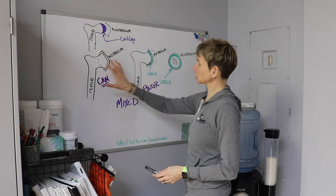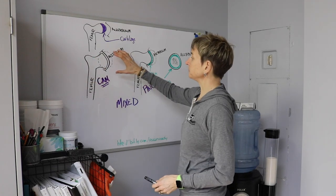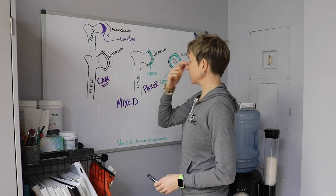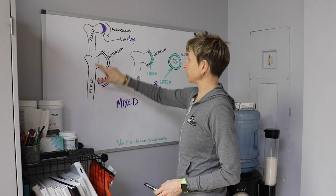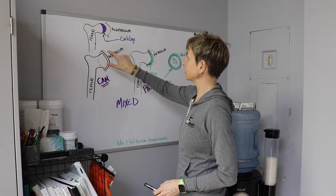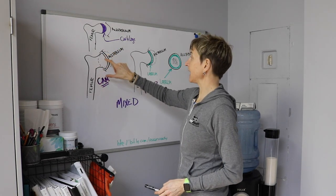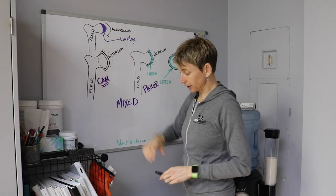So I've drawn these pictures on the board. And this is basically, so this is your femur, and then this is the head of your femur, which is almost like a ball on the end. And this is the socket of your hip joint.